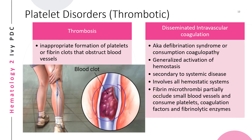One example of a thrombotic platelet disorder is disseminated intravascular coagulation, also known as DIC, also called defibrination syndrome or consumption coagulopathy. This is the generalized activation of hemostasis that only happens secondary to systemic diseases. Fibrin microthrombi partially occlude small blood vessels, consuming platelets, coagulation factors, and fibrinolytic enzymes, setting off a series of toxic and inflammatory processes.